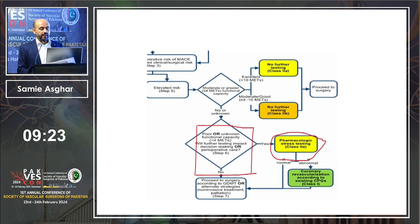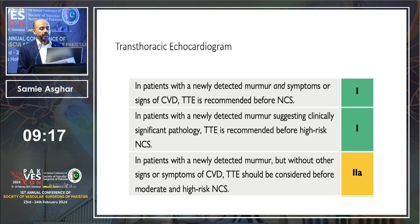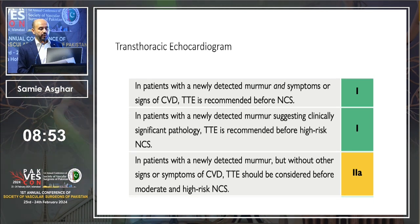If there is an alternate, go for pharmacological stress testing. If there is no alternate and the surgery must be done, there is no point in further testing. The European guidelines are similar, and specifically address when to do a transthoracic echocardiogram — whenever there is a newly detected murmur with symptoms and signs of cerebrovascular disease, TTE is recommended before non-cardiac surgery, with a strength of recommendation of 2a.